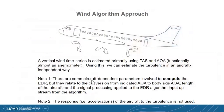The NCAR algorithm uses a wind-based approach. The newer version, which has been around since about 2005–2008, uses vertical winds. A vertical wind time series is estimated primarily using true airspeed and angle of attack, which functionally acts like an anemometer. Using this, we can estimate turbulence in an aircraft-independent way. There are some aircraft-dependent parameters involved, but importantly the response of the aircraft — such as acceleration — is not used in this algorithm.